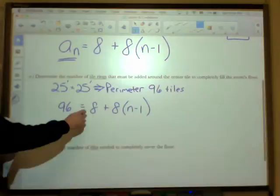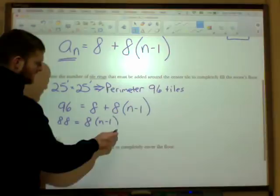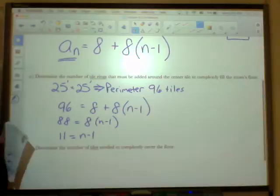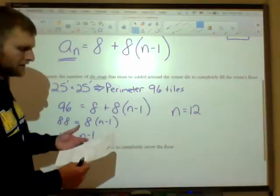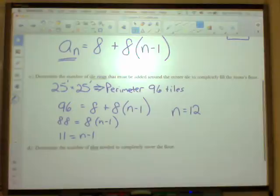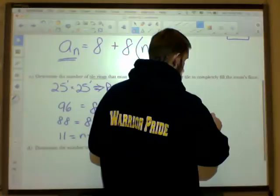Tiles to cover the whole room. So essentially, I subtract 8, I get 88 equals 8 times n minus 1, divide both sides by 8, I get 11 equals n minus 1, add 1, you get n equals 12. So, and you know, I don't have a lot of room here, but I would write something along the lines of it takes 12 tiles, or 12 tile rings must be added to that center tile in order to fill the whole room. So this is the number of rings, right?